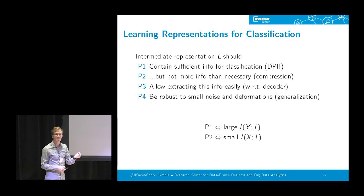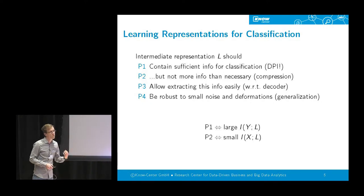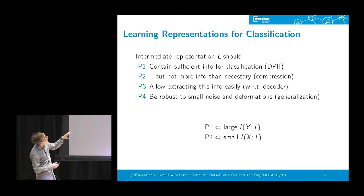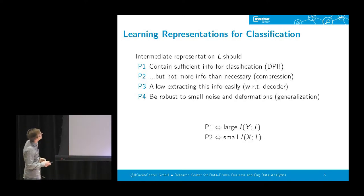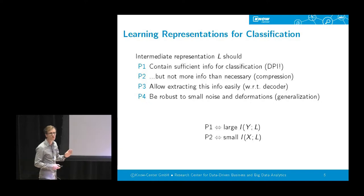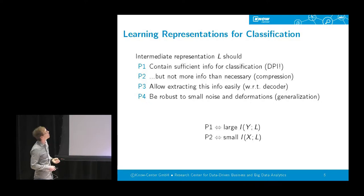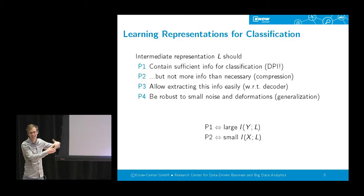We also want the latent representation to be simple in a well-defined sense, relative to the decoder structure. If we have a deep decoder, the representation can be more complex; if we are near the last layer, it should allow easy extraction of class information. Finally, we want the latent representation to be robust to small noise and small deformations of the input features — small rotations or added noise should not change the class assignment. This robustness is also believed to relate to generalization.